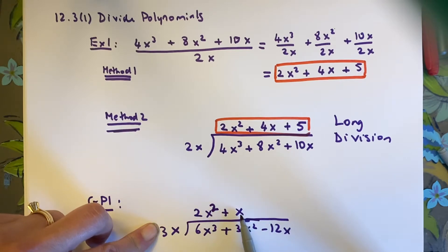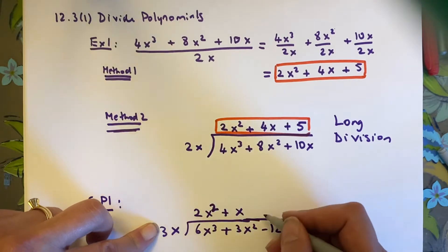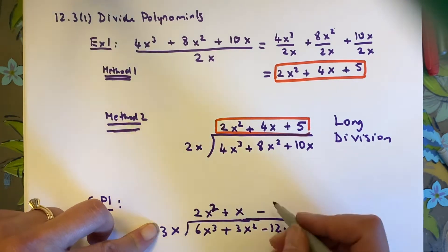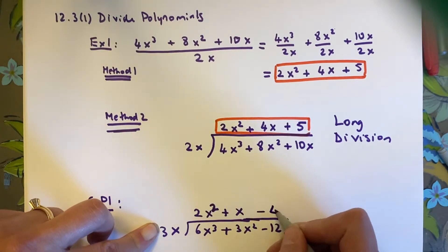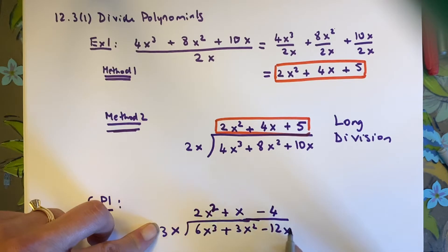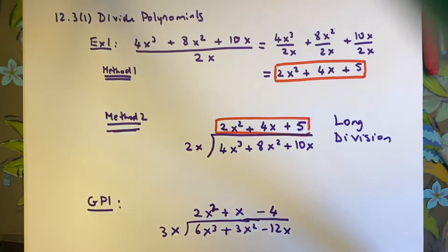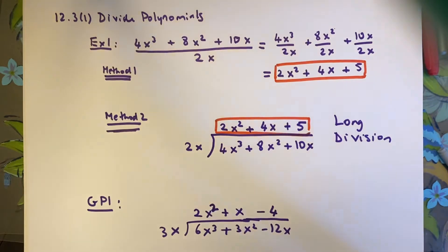For the third term, what times 3x gives me negative 12x? Well, 4 times 3 is 12, and negative 4 times 3x gives negative 12x. So the answer to guided practice 1 is 2x squared plus x minus 4.